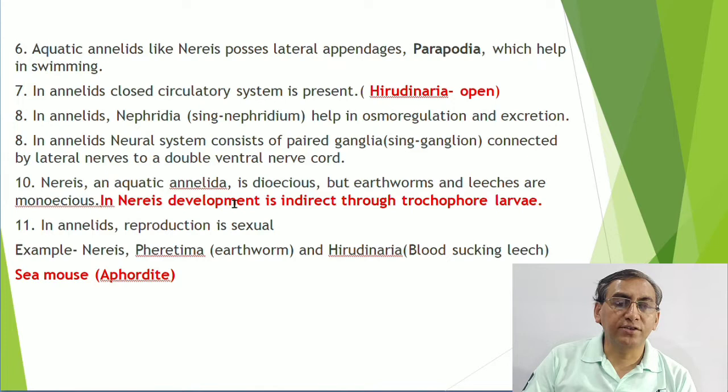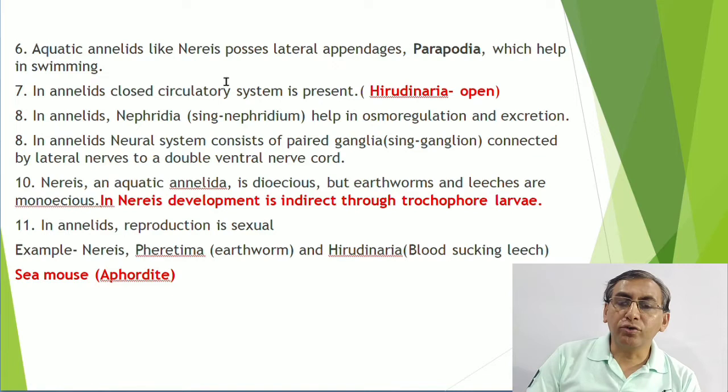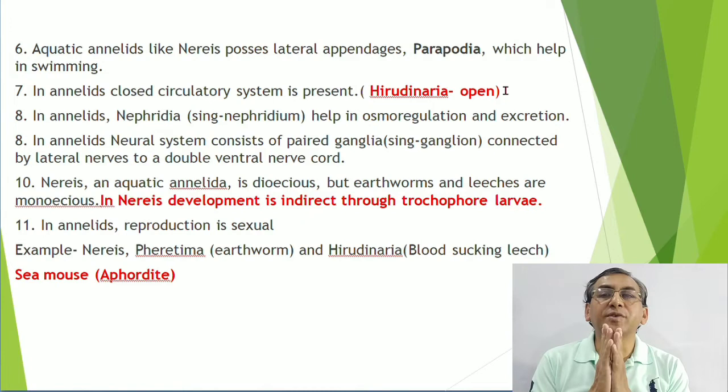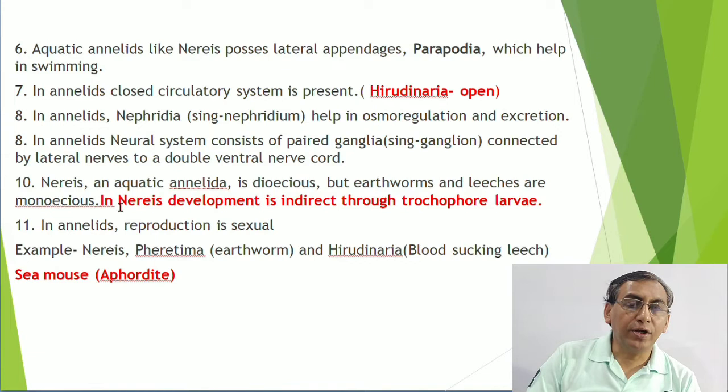The closed circulatory system starts with phylum Annelida. In Annelida the circulatory system is closed - earthworm has a closed system - but in class Hirudinea (leech), the circulatory system is open. For excretion and osmoregulation, annelids have nephridia, which are of ectodermal origin.